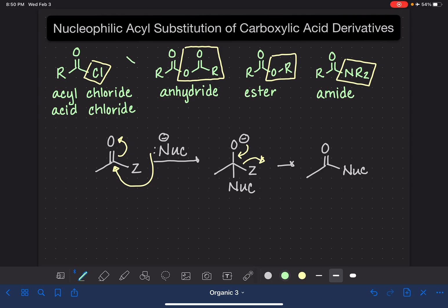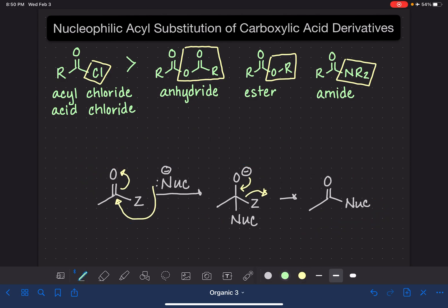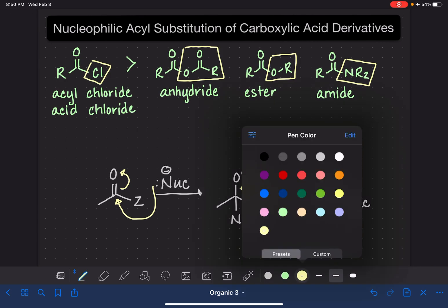The acid chloride or the acyl chloride is the most reactive out of all of the carboxylic acid derivatives. This is because that chloride is a really good leaving group. So this is the most reactive out of all of our derivatives.